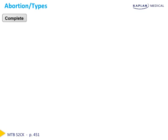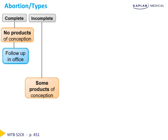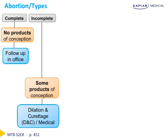Let's start with a complete abortion. With a complete abortion, there are no products of conception left behind, and we simply follow these patients up in the office to ensure that their symptoms resolve. Next, we have an incomplete abortion. With the incomplete abortion, there are some products of conception left behind. We offer either surgical management with a dilation and curettage or medical management to expel the products of conception.